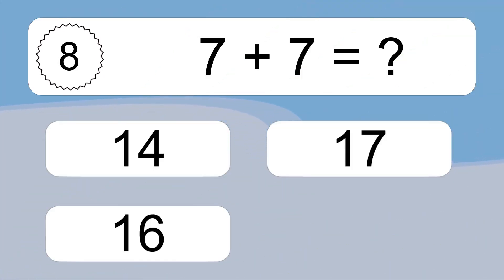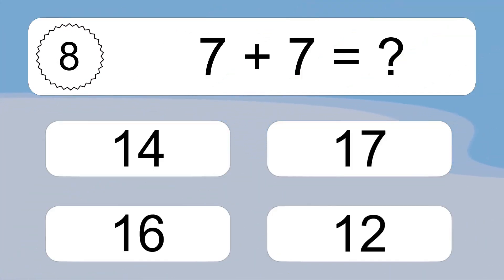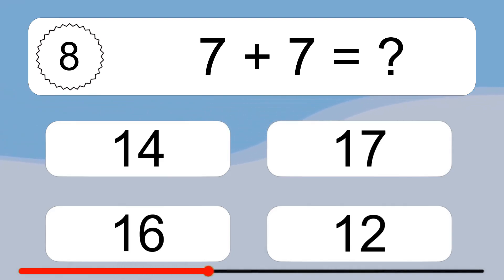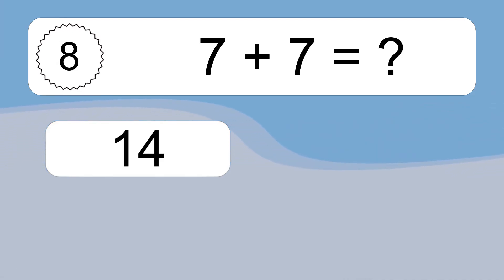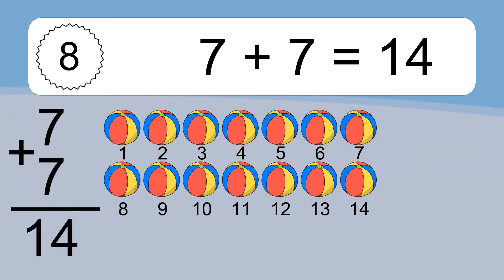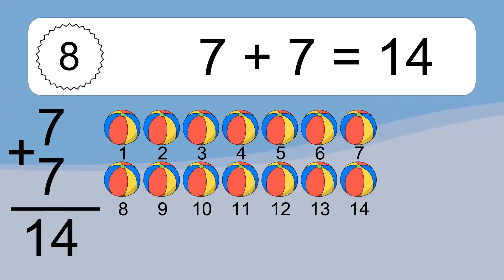Let's count it: 1, 2, 3, 4, 5, 6, 7, 8, 9, 10, 11, 12, 13, 14, 15. And: 1, 2, 3, 4, 5, 6, 7, 8, 9, 10, 11, 12, 13, 14.